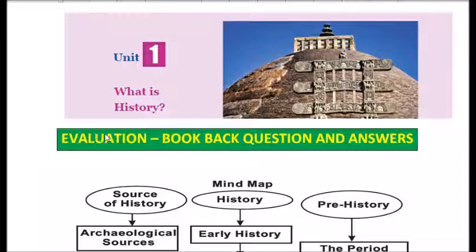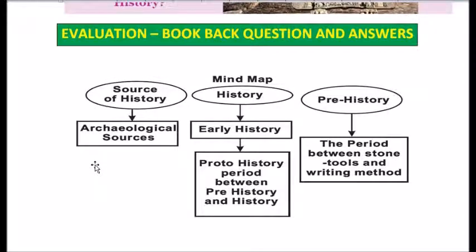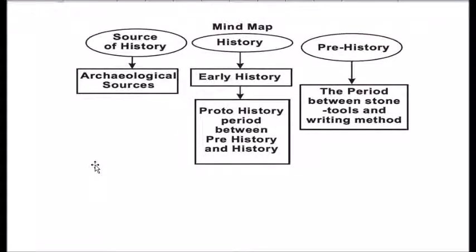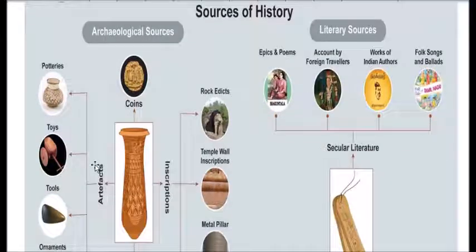Good morning children, welcome back. In today's session we are going to do the evaluation of class 6 unit 1. History is classified into prehistoric, proto-historic, and historic periods. The prehistoric period is where no written records are available. The proto-historic period is where written records are available, not of that culture, but other cultures have it. The historic period is one in which written records are available. The sources of history can be classified as archaeological sources and literary sources.